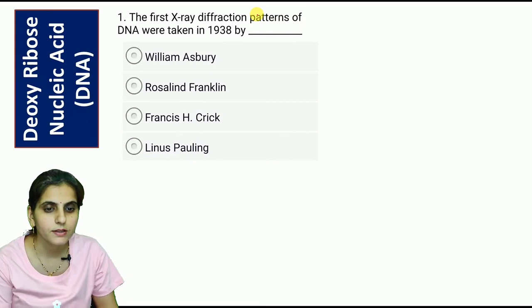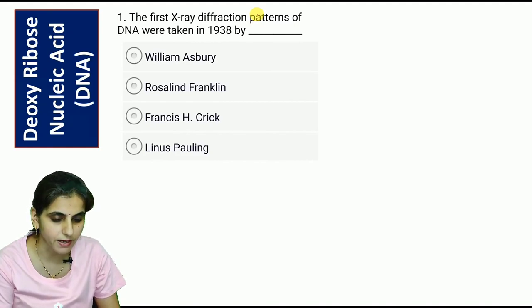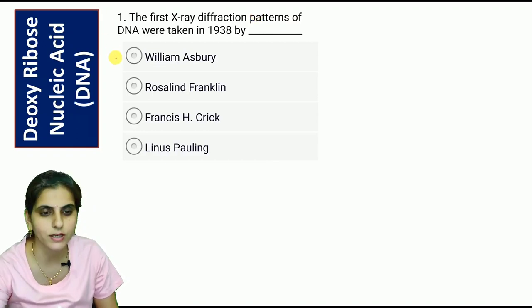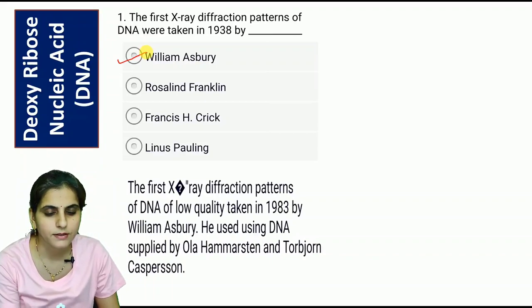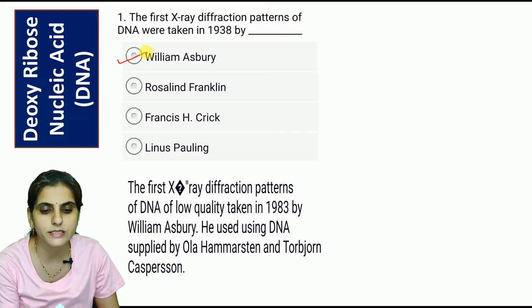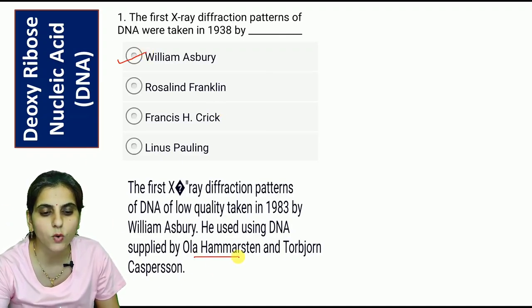Question one: The first X-ray diffraction pattern of DNA was taken in 1938 by whom? The correct option is A, that is William Astbury. The first X-ray diffraction pattern of DNA, of low quality, was taken in 1938 by William Astbury. He used DNA supplied by Ola Hammarsten and Torbjörn Caspersson.